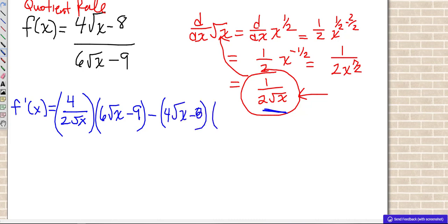And then take the derivative of the bottom. Well, it would be the same thing. 6 times 1 over 2 square roots of x. And then, of course, the derivative of 9 is 0. And then the quotient rule says to square the bottom.